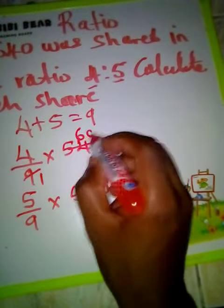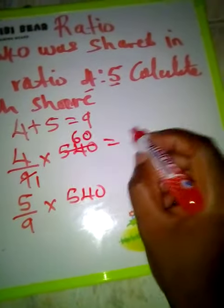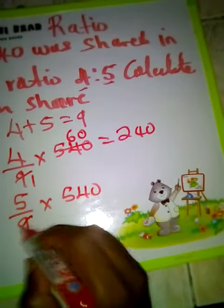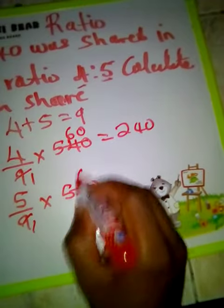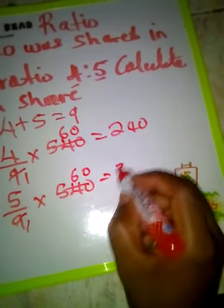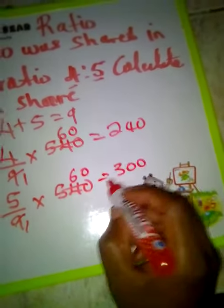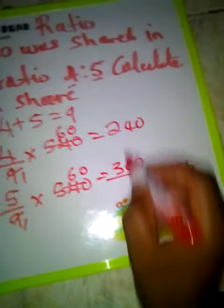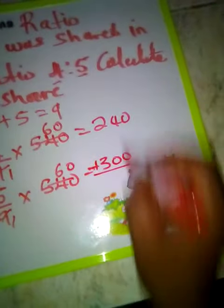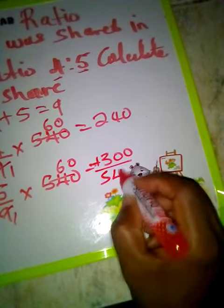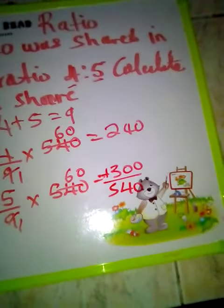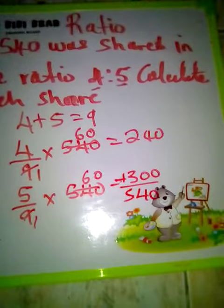So the smaller share is 4/9 times 540, which gives 240, and the larger share is 5/9 times 540, which gives 300. When we add them back together we get 540. Remember to like and subscribe.